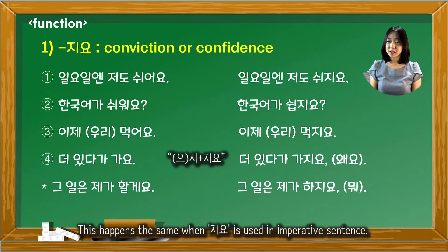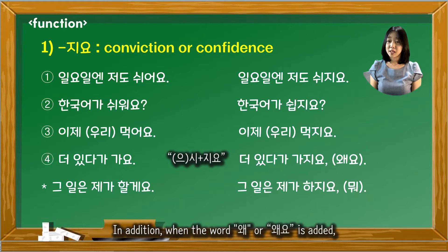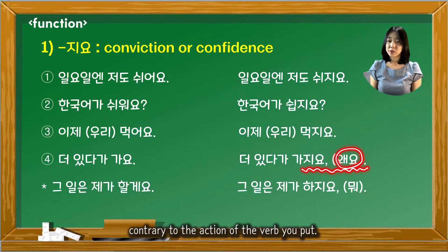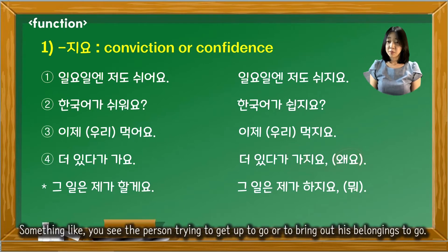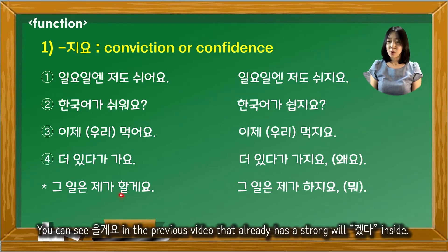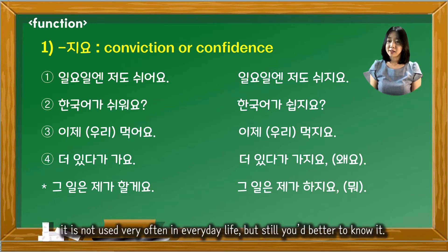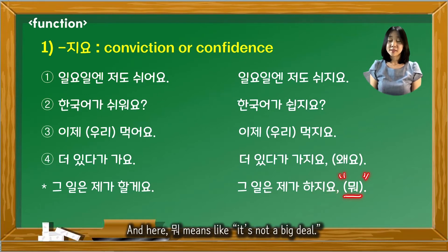This happens the same when 지요 is used in imperative sentences. In addition, when the word 왜 or 왜요 is added, it is often understood that the other person has expressed an opinion contrary to the action of the verb — something like seeing the person trying to get up to go or bringing out belongings to leave. You can see 을게요 in the previous video, which already has a strong 겠다 inside. 지요 is a stronger tone than 을게요 and in fact is not used very often in everyday life, but you'd better know it. Here, 뭐 means something like 'it's not a big deal.'